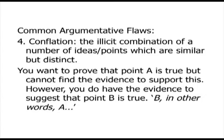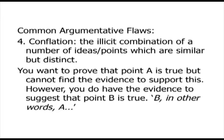The fourth common argumentative flaw is what's called conflation. Conflation is a technical term that means the combining of different ideas together so that you pretend they are the same thing. Often these ideas are related and quite similar, but they are still distinct — they are not the same thing. So if you want to prove point A is true but don't have the evidence for it, and you do have evidence that point B is true, and points A and B are close with a definite relationship between them — what some students will do is conflate A and B and argue that B, in other words A, or B, that is to say, A.